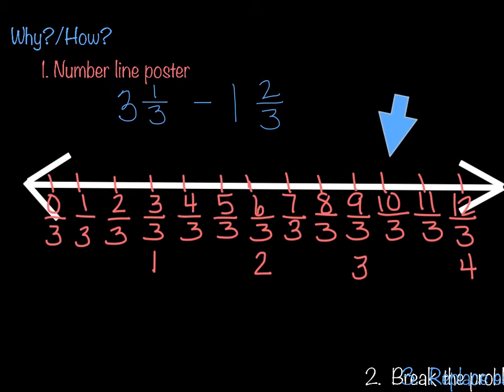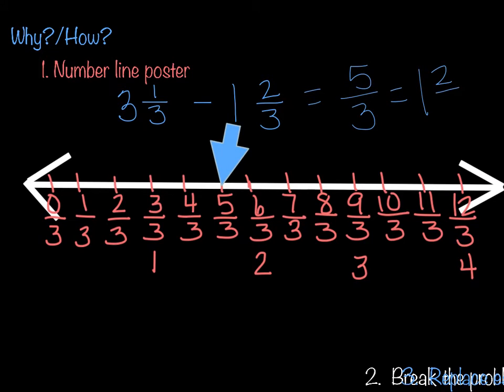If you look at my blue arrow here, this is where we're going to start. We're going to start at 10 thirds and subtract 1 and 2 thirds. So 1 is going to be 3 thirds, right? So I'm going to back it up 3 spots: 1, 2, 3. That's my whole number 1. Then I need to subtract another 2 thirds: 1, 2. So my final answer would be 5 thirds, or does anyone know what mixed number that's going to be? That would be 1 and 2 thirds.